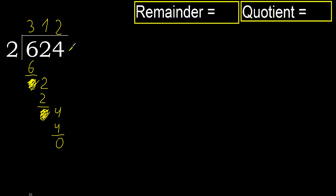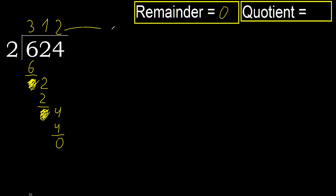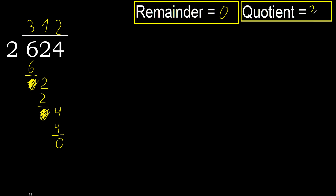Next — there is no more number, therefore finish it. 624 divided by 2 is 312.